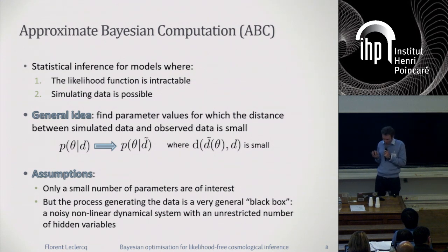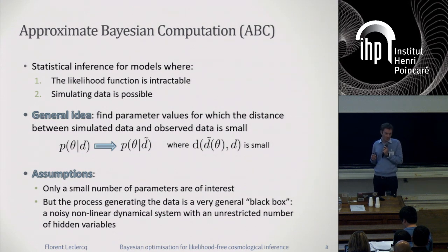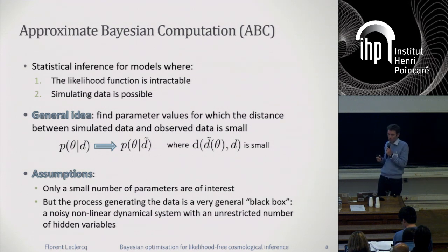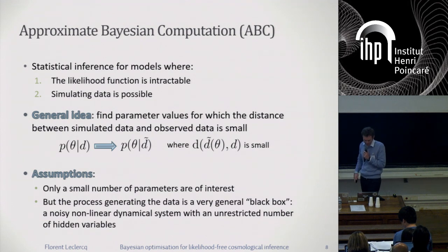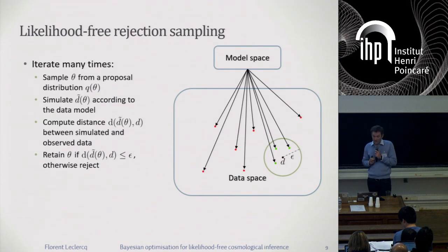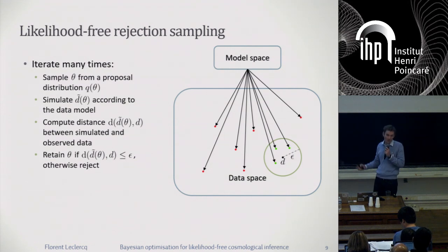In our case, the assumptions are that only a small number of parameters are of interest — θ is a fairly low-dimensional vector — but the process generating the data can be very general, essentially a black box. It can be, and in our case will be, a noisy non-linear dynamical system with a very large number of hidden variables. In our case the hidden variables are the individual phases of the simulation. The simplest idea is what's known as likelihood-free rejection sampling — sometimes incorrectly called just ABC in the astrophysics literature, though ABC is a much more general class of methods.